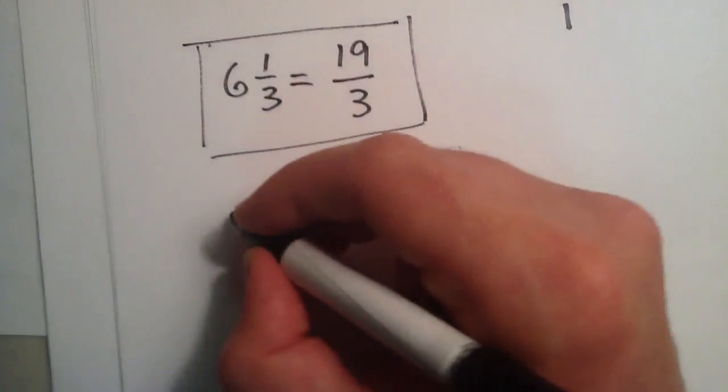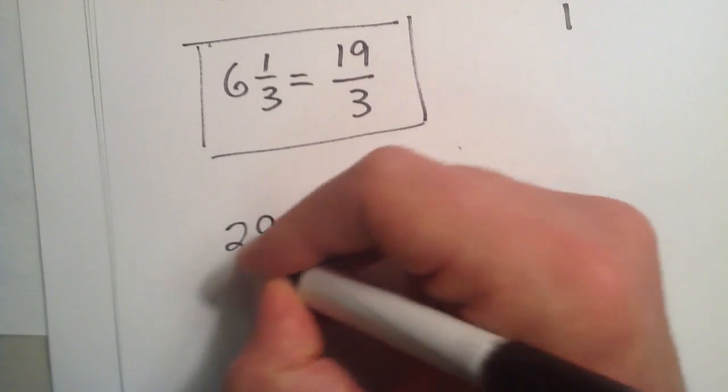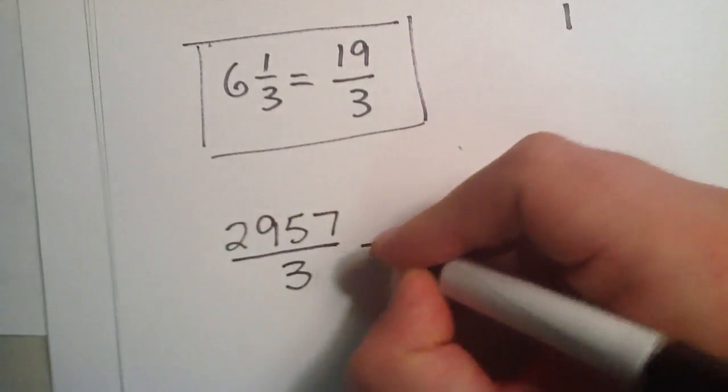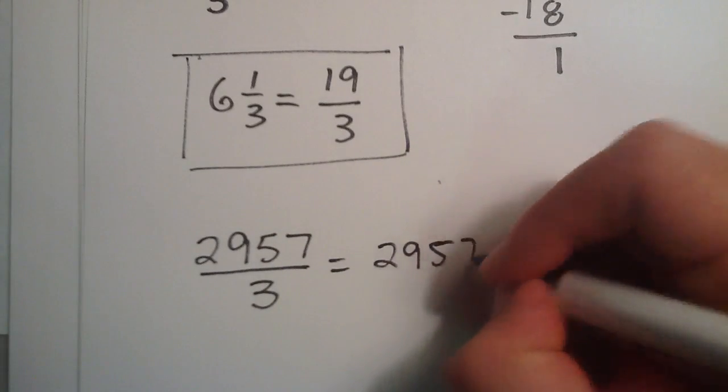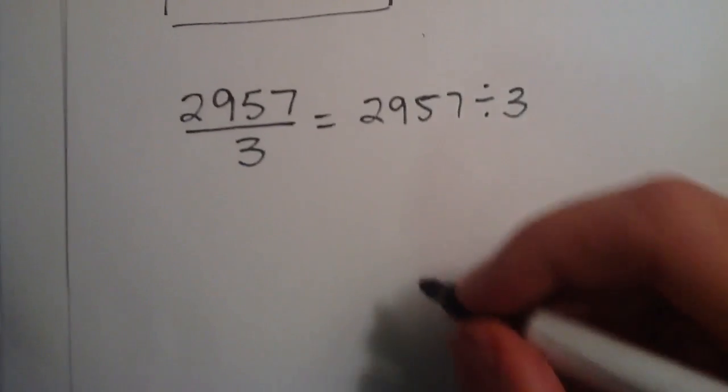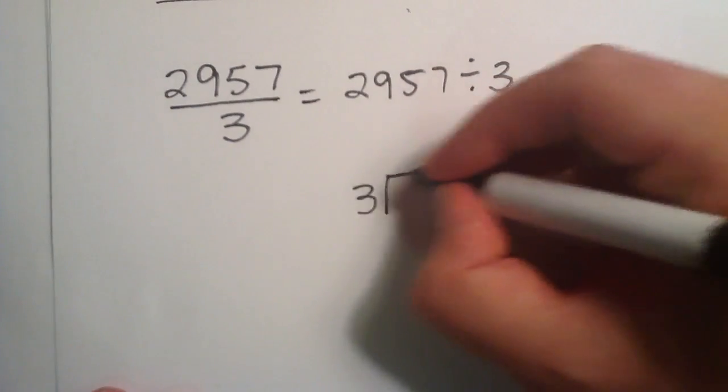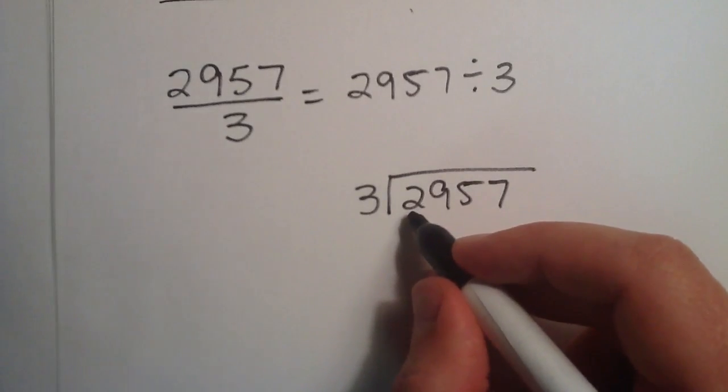And in the last example, we're going to do 2,957 over 3, which is simply just 2,957 divided by 3. And writing this in the elementary form, we can write it this way.